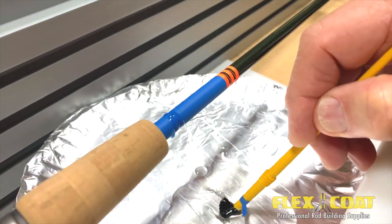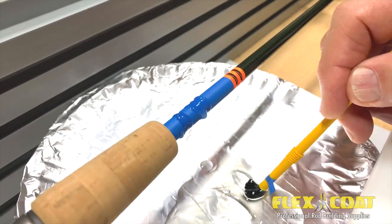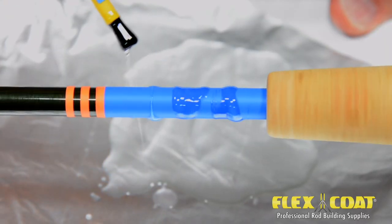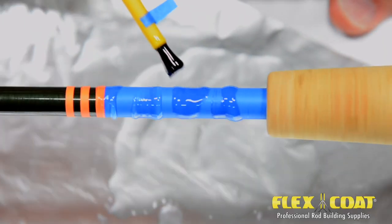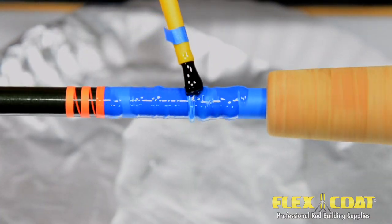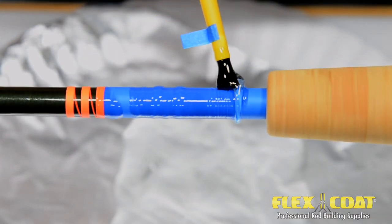Again, with a quarter inch brush, Roger attacks this butt wrap with multiple rounds of a fully loaded brush. Working toward the cork is a delicate procedure where too much finish will lap up onto the cork and have a sloppy outcome.